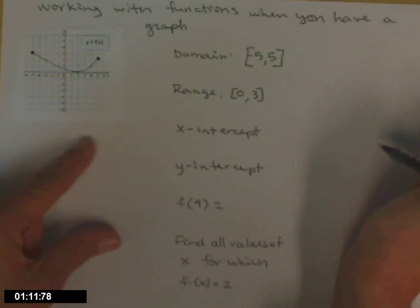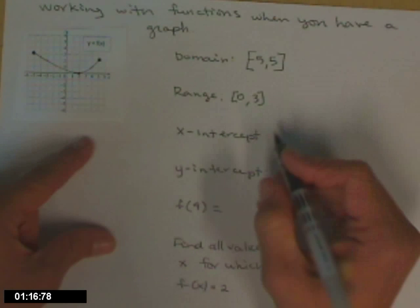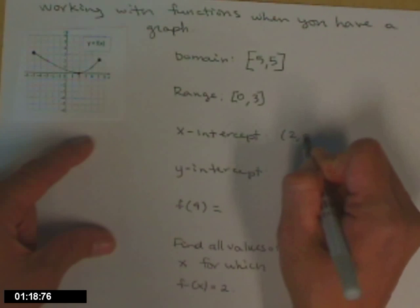X-intercept. Where does your graph cross or touch the x-axis? That happens right in here, at the point 2, 0.